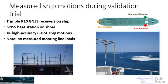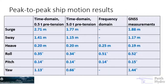We didn't have load measuring bollards at Geraldton, so we only have ship motions to validate. Here you'll see the measurements and predictions. Because we didn't have mooring line loads, we used either a half tonne or a five tonne pretension and assume the actual pretension was in between. The six degrees of freedom are shown: surge, sway, heave, roll, pitch and yaw. GNSS measurements show peak-to-peak surge of 1.88 metres, peak-to-peak sway of 1.17 metres, heave 0.19 metres, roll half a degree, and so on.